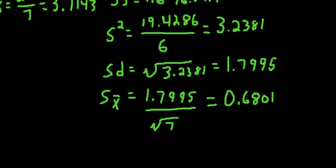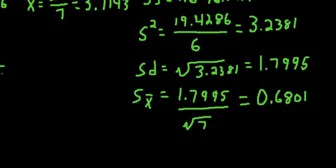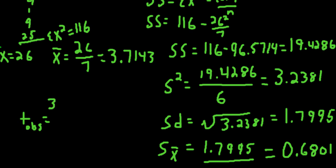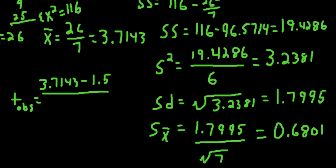Which now we have all of the ingredients for the t one-sample t-test equation. So our t-observed value is going to be 3.7143, subtract our hypothesized population mean, or what we're assuming is a population mean for this problem, 1.5, and dividing that by the standard error of the mean, which is 0.6801. So our t-observed value for this problem is 3.26, roughly.